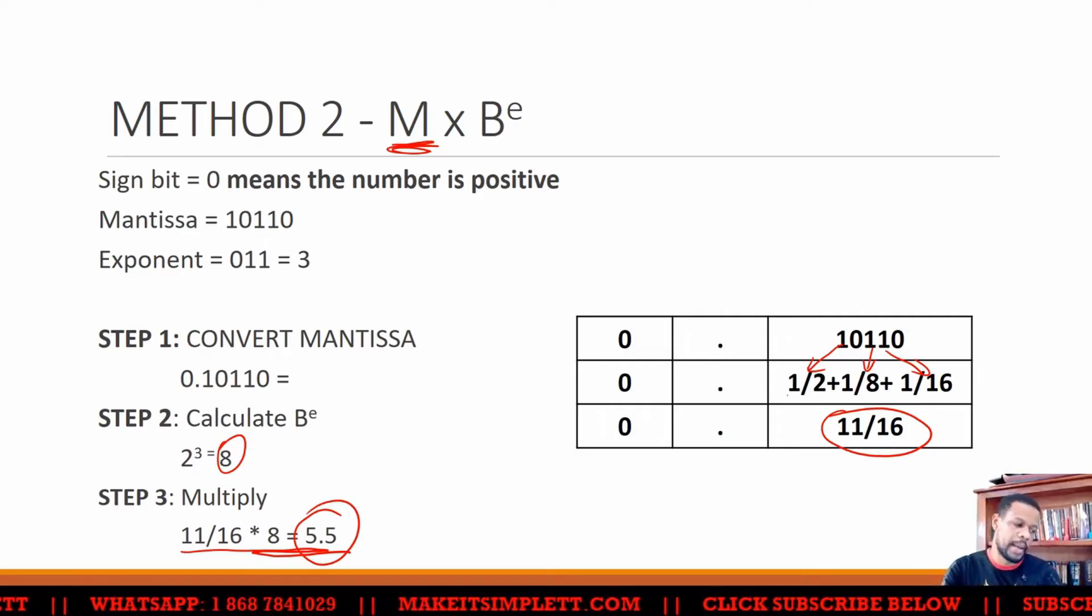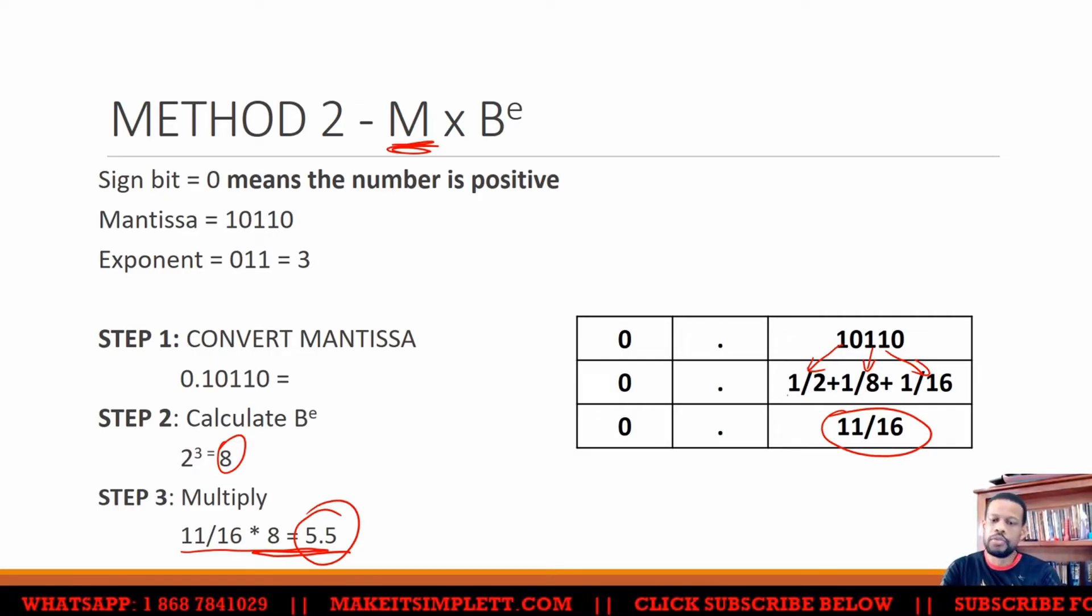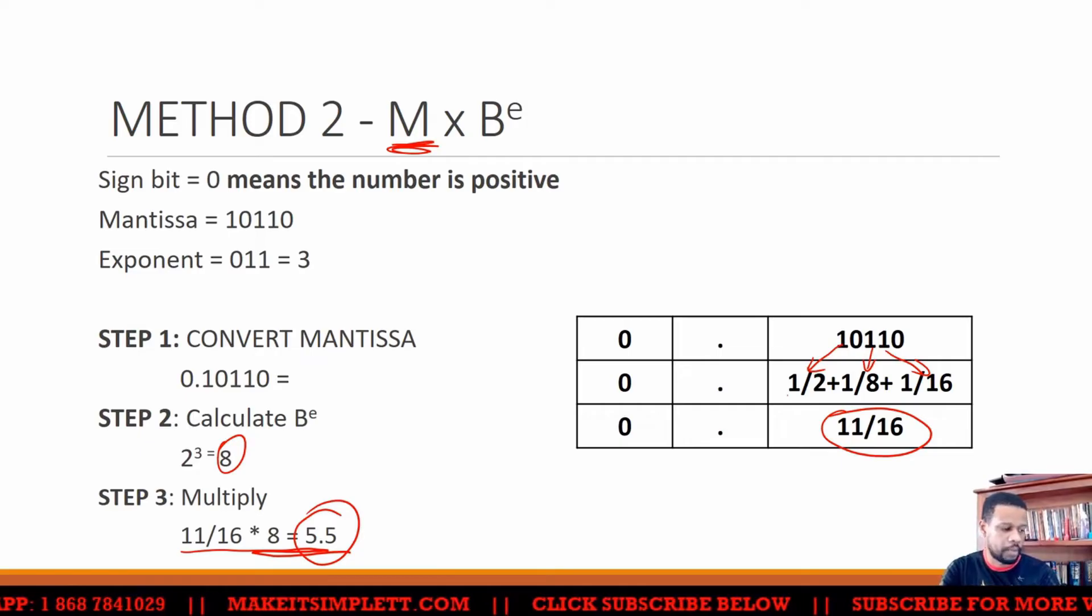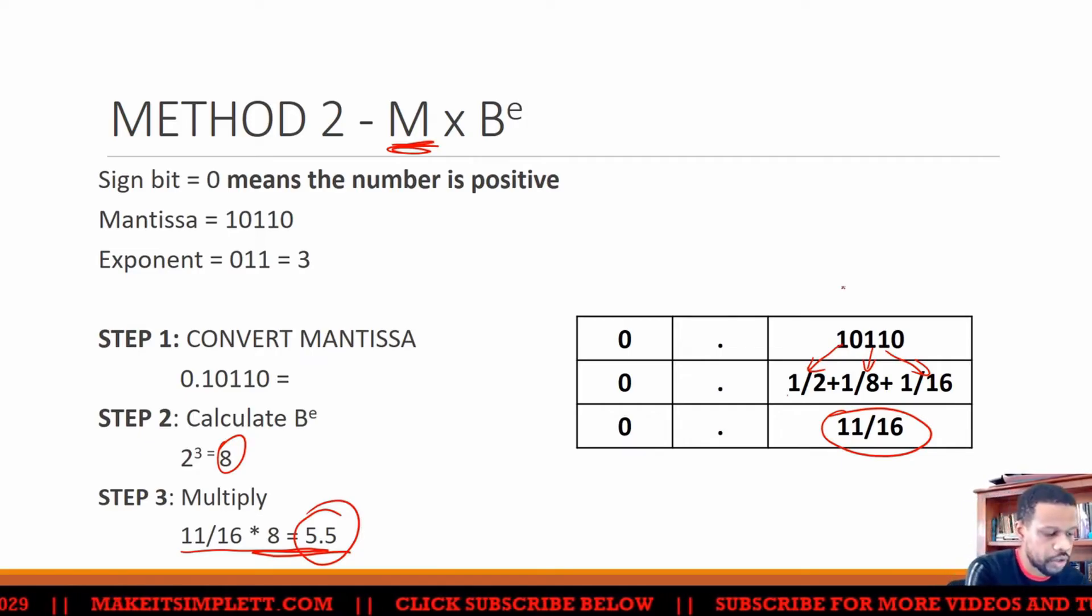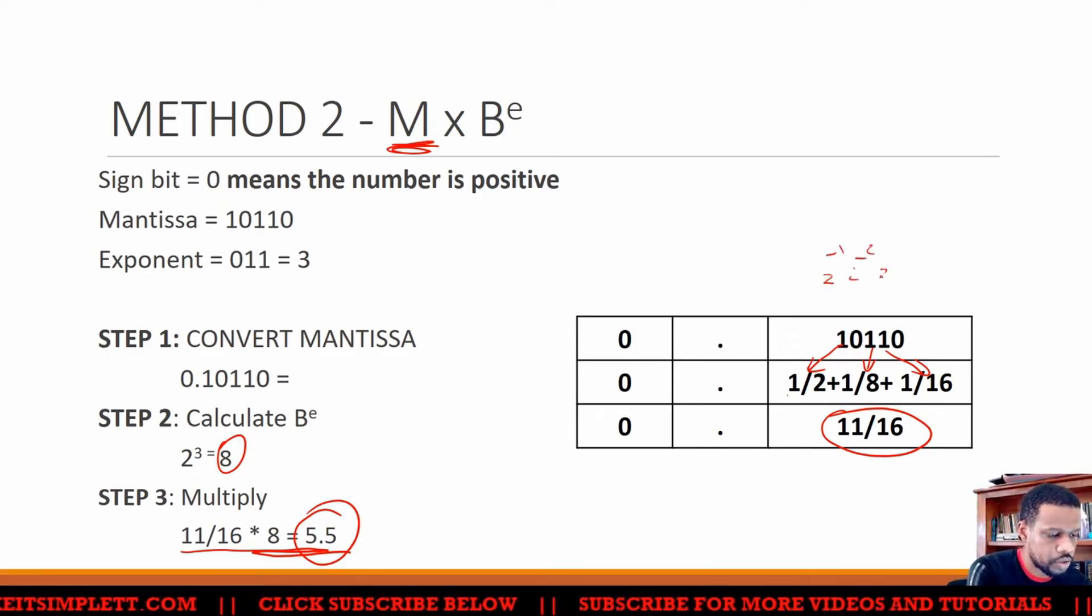Both of them will work all the time. It depends on how you want to work it out. But this one here, you need to know what's going on after the point. So 2 to the minus 1, and then 2 to the minus 2, 2 to the minus 3.